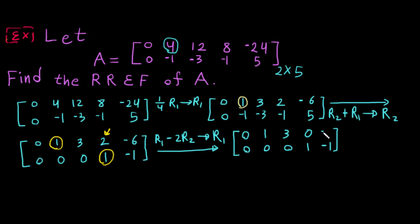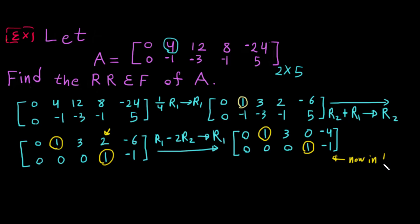Now we want to check it again. The leading one — go below then go right until you find one. We don't have any element below because we only have 2 rows. So the matrix is now in RREF.